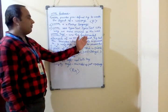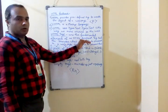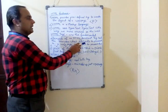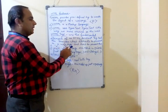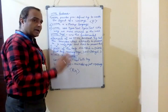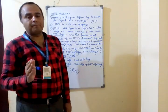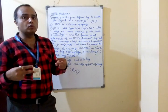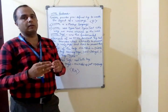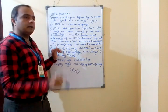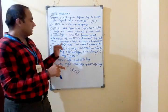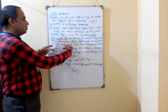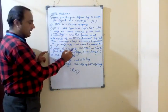Tags are the fundamental elements of an HTML document. Tags tell the browser which elements to present in a web page and how to present them. These tags we are using inside angle brackets — a less than sign and a greater than sign. Between these two angle brackets, we are writing the tag name.